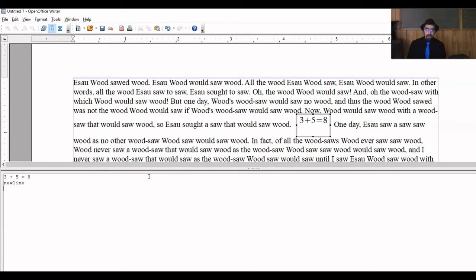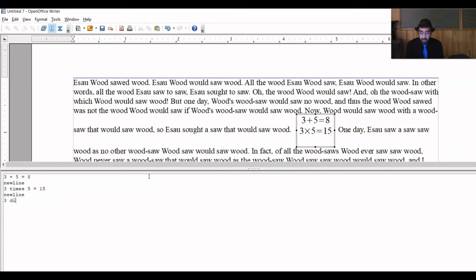So what if instead of 3 plus 5 equals 8, I wanted to say 3 times 5 equals 15? Well, look at that! I don't need to do the Alt go to whatever. Just times! And it knows to do that. 3 div 5 equals 0.6. Division symbol. There's no division key on the keyboard, but I can do it this way.